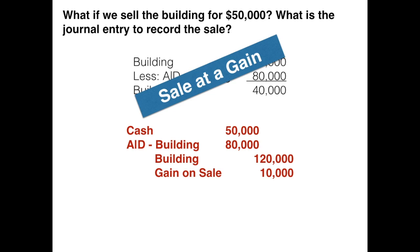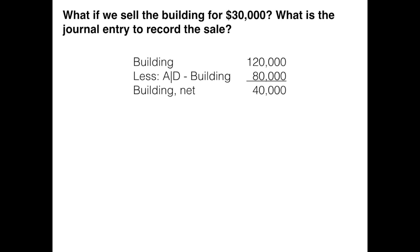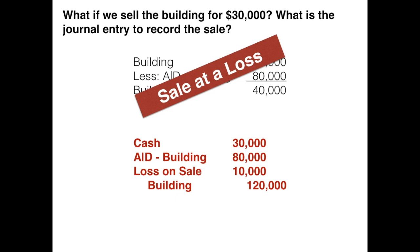What if we have the reverse — what if we sold the building for $30,000? Take a shot at this one: follow the same process, make sure the journal entry balances, push pause then come back. What you should have found is that this is a sale at a loss — we sold it for $10,000 less than its book value of $40,000. We debit cash for $30,000, debit accumulated depreciation to remove it, credit the building for $120,000, and the entry doesn't balance — we need a debit of $10,000. Losses act like expenses, so we debit the loss.